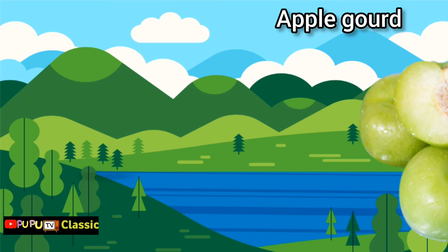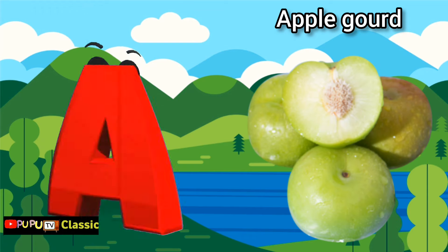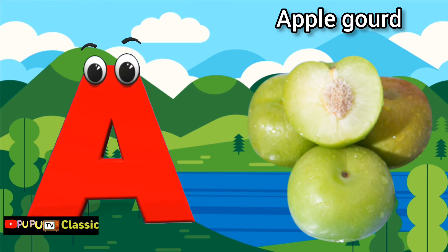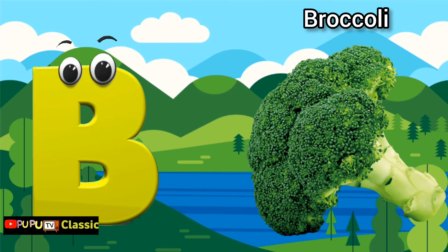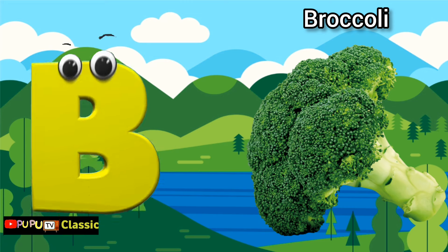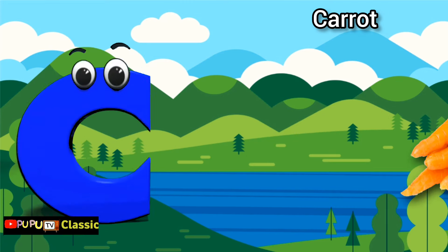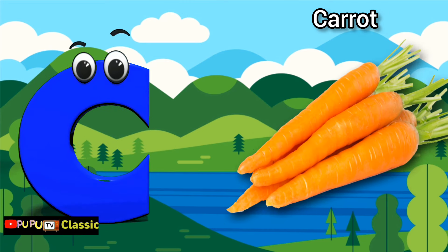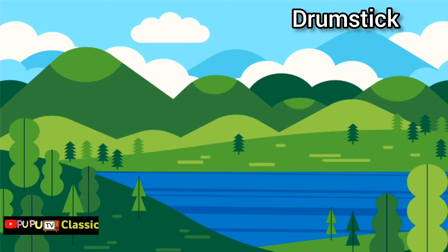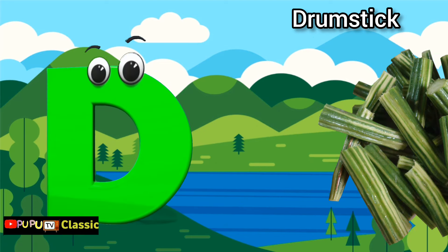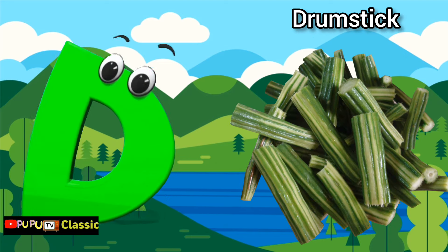A is for apple gourd, apple gourd. B is for broccoli, broccoli. C is for carrot, carrot. D is for drumstick, drumstick.